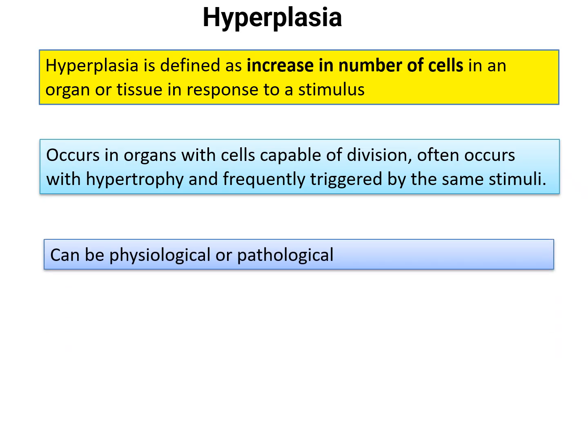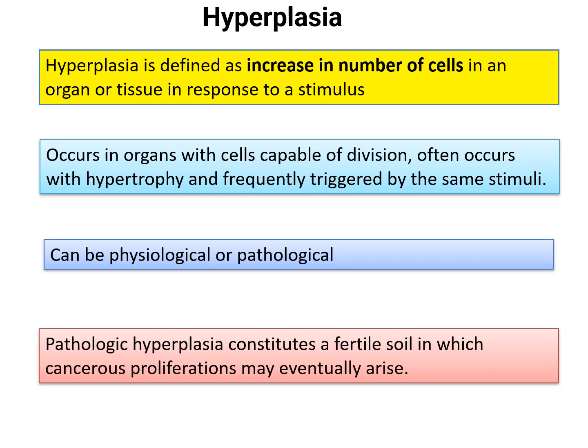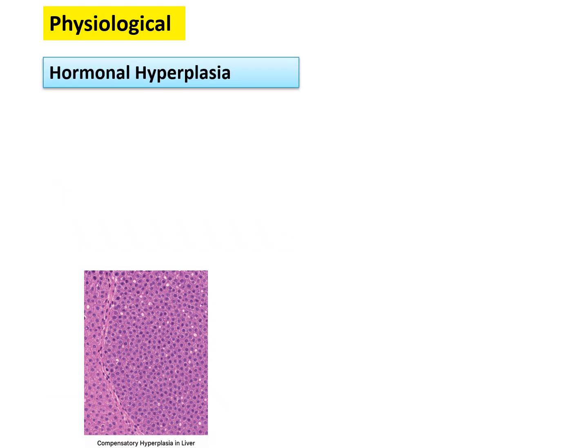Hyperplasia can be physiological or pathological. Pathological hyperplasia constitutes a fertile soil in which cancerous proliferation may eventually arise — that is why we must detect pathological hyperplasia at early stages to prevent cancer. The best examples of physiological hyperplasia are hormonal hyperplasia and compensatory hyperplasia.